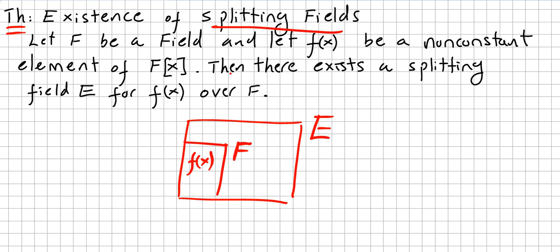Let's get back to the theorem on existence of splitting fields. Let F be a field and let f(x) be a non-constant element of this ring of polynomials. Then there exists a splitting field E for f(x) over F. So basically there will always be a splitting field for a polynomial in this ring of polynomials.